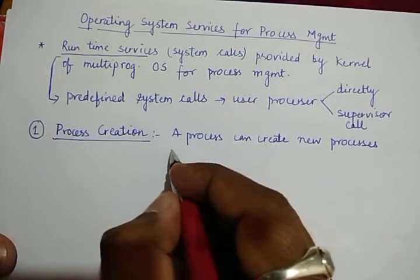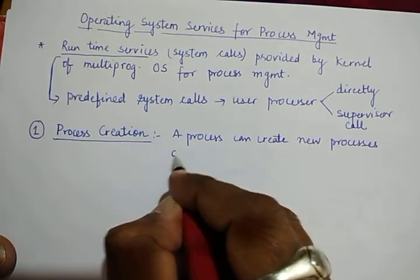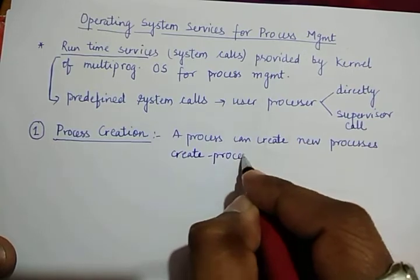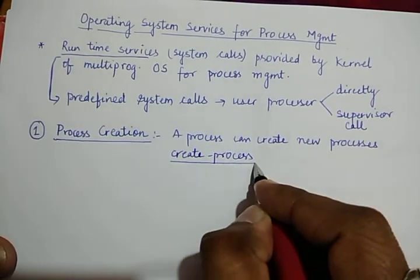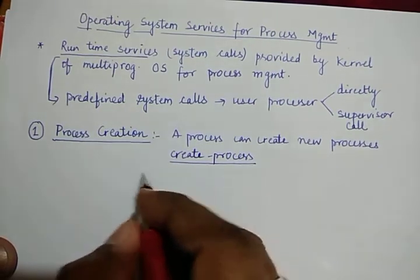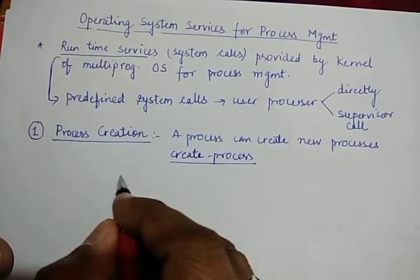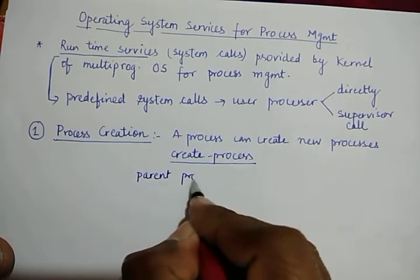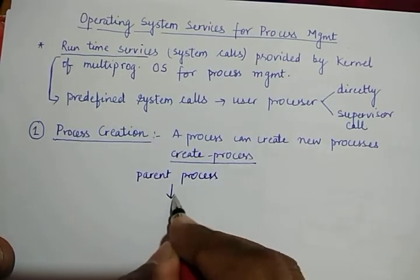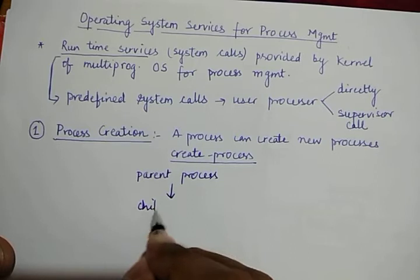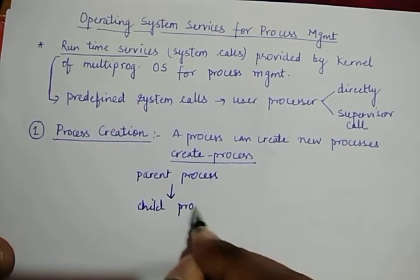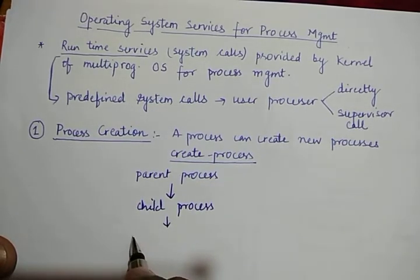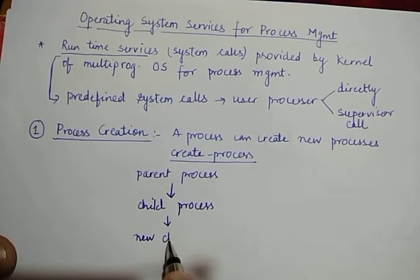For this, it uses a system call named 'create process'. In general terms, the process which is creating a new process is called the parent process, and the process which is getting created is called the child process. This child process may in turn create new sub-child or child processes.